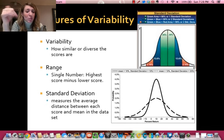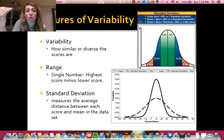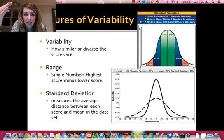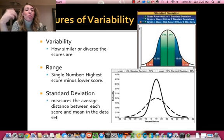So variability is how similar or diverse the scores are. For example, if I give a test to my second period and my fourth period, and both of you guys get the average of 80, you might assume both classes did equally as well. But that's not true because you don't know how close everyone's scores actually were to 80. You don't know if there was a lot of 70s and a lot of 60s and a lot of 90s and a lot of 80s. You don't know. You just know that the average was 80.